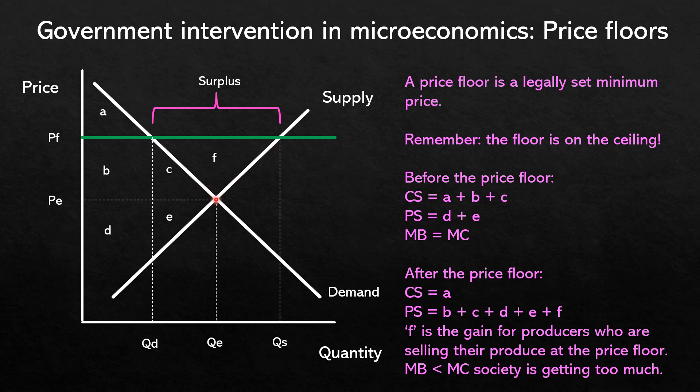Governments intervene in a free market for a reason. In this example we look at what happens when governments intervene to make sure farmers are guaranteed a price above the market equilibrium, so that they are guaranteed a certain level of income. This relates to price control in agricultural product markets such as wheat or corn. Farmers' incomes in free markets are often unstable or too low. Unstable incomes may be due to the price elasticity of supply being relatively inelastic, as farmers cannot respond to price changes in the short term due to the length of time it takes to change production levels in an agricultural industry.